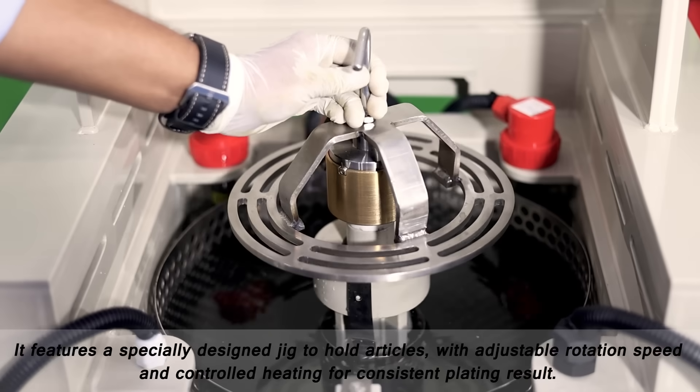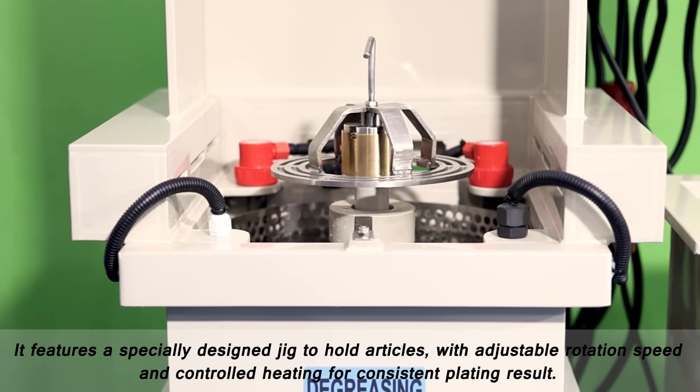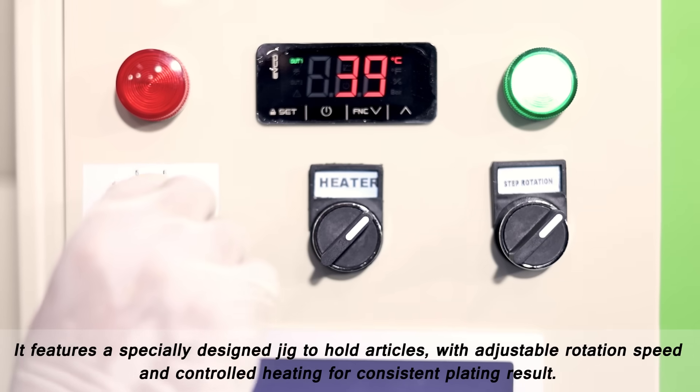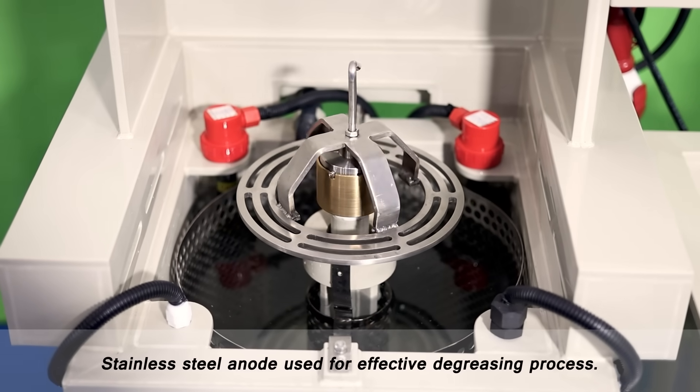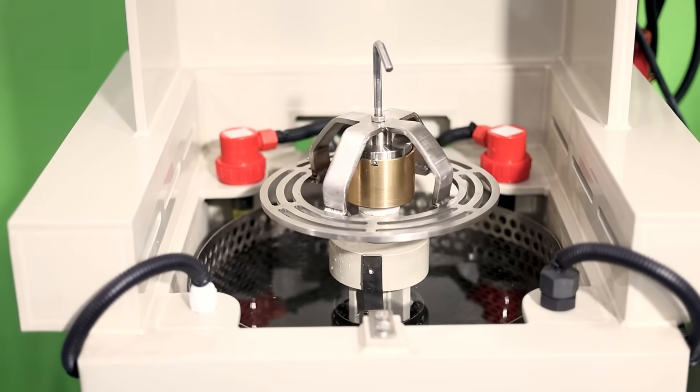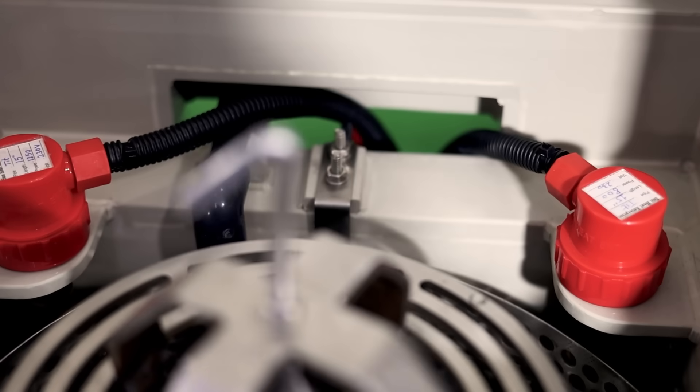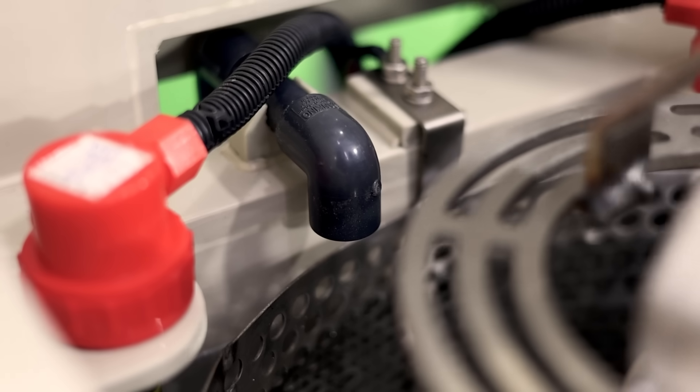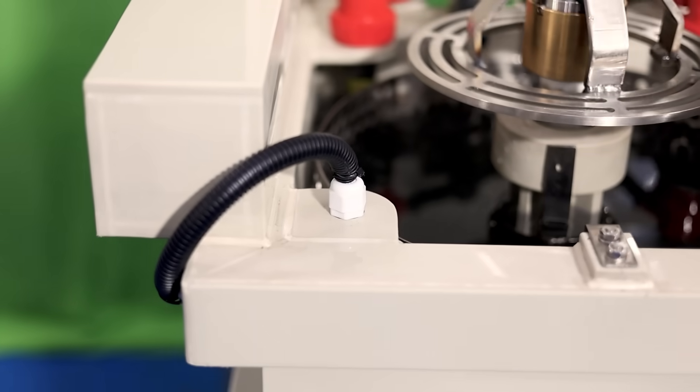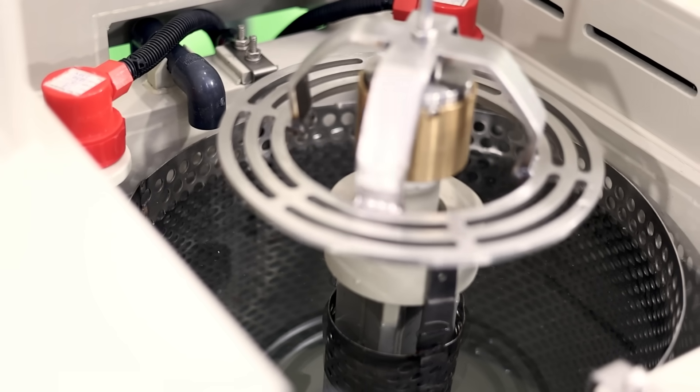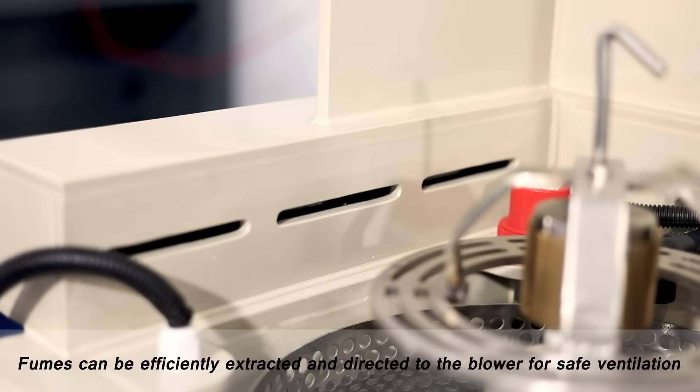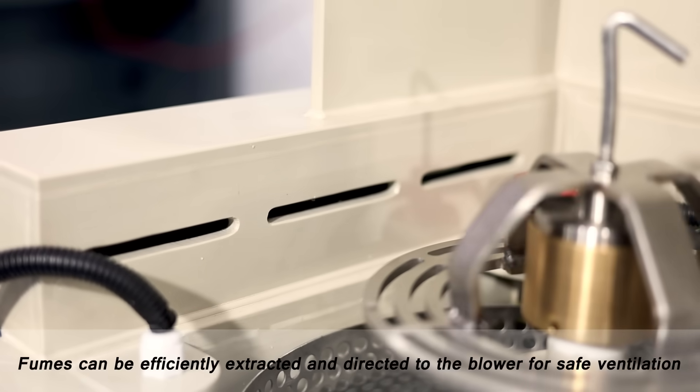It features a specially designed jig to hold articles with adjustable rotation speed and controlled heating for consistent plating results. Stainless steel anodes are used for effective degreasing. Fumes can be efficiently extracted and directed to the blower for safe ventilation.